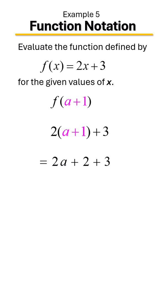Lastly, you're going to combine like terms if you can. And here we have like terms of two plus three, which gives us five. And that is our final answer, 2a plus five.